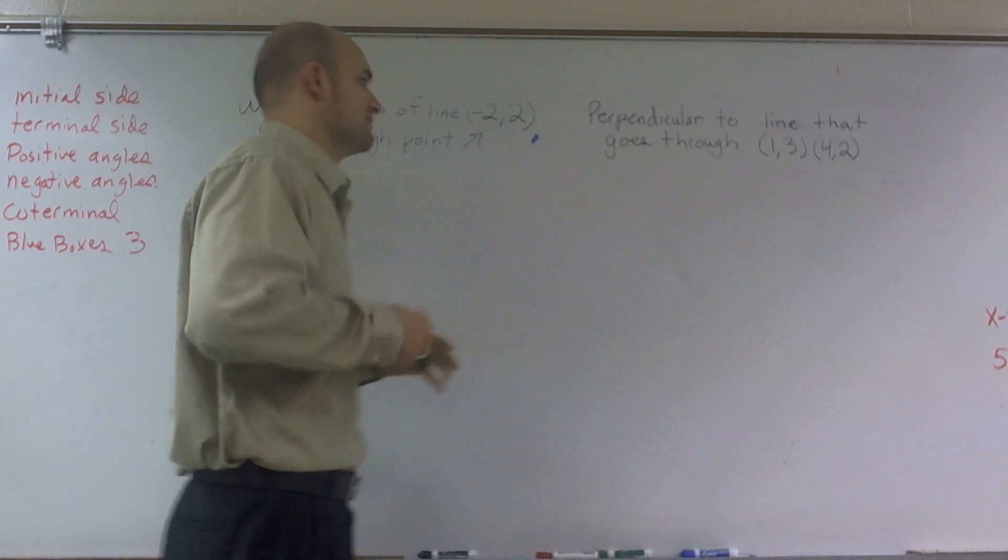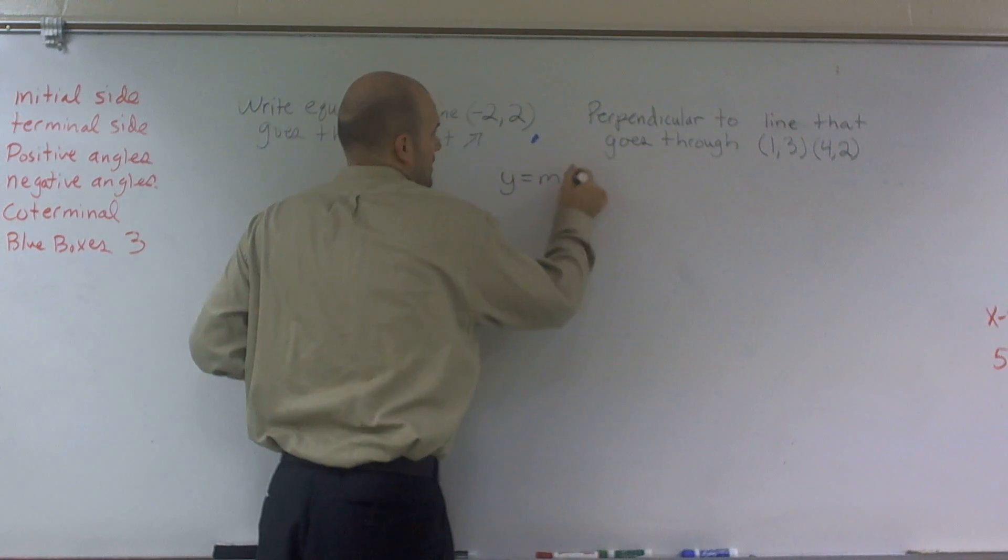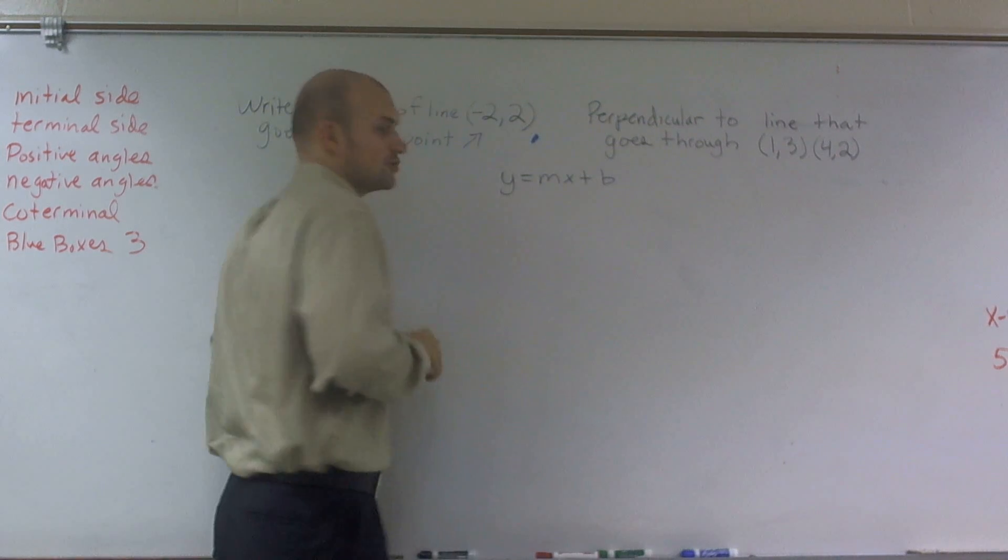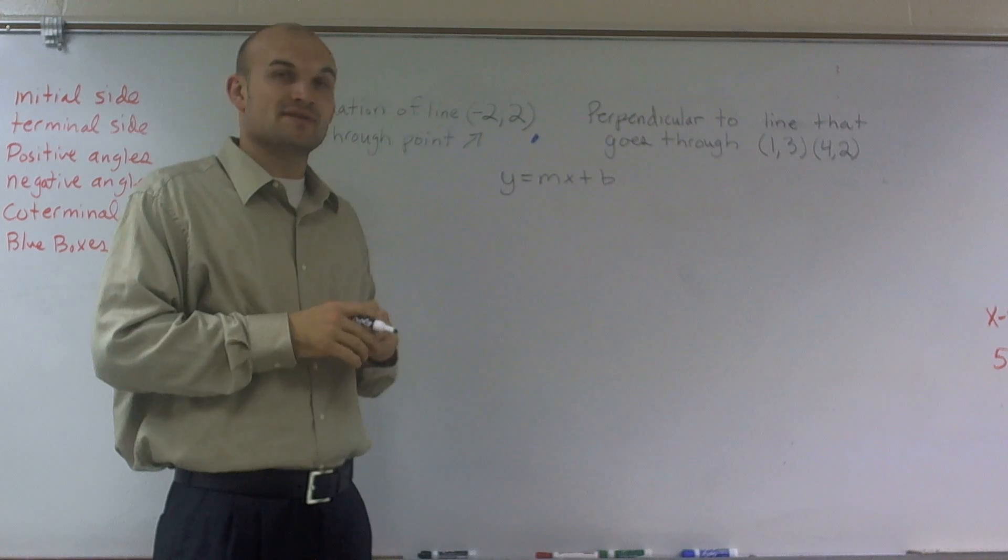So the first thing you want to do is remember what an equation of a line is, which we're going to write as y equals mx plus b. This is what we call the slope-intercept form, where m represents our slope and b represents our y-intercept.